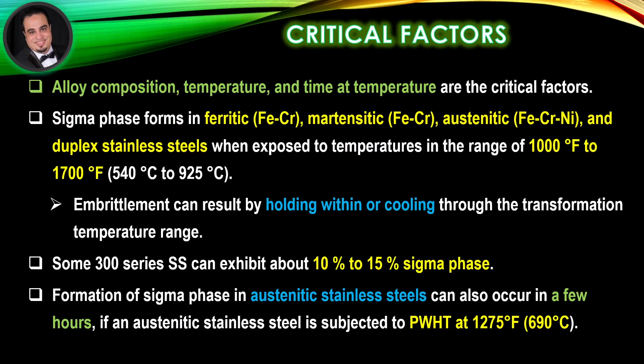Critical factors: alloy composition, temperature, and time at temperature are the critical factors. Sigma phase forms in ferritic iron-chromium, martensitic iron-chromium, austenitic iron-chromium-nickel, and duplex stainless steels when exposed to temperatures in the range of 1000 degrees Fahrenheit to 1700 degrees Fahrenheit.